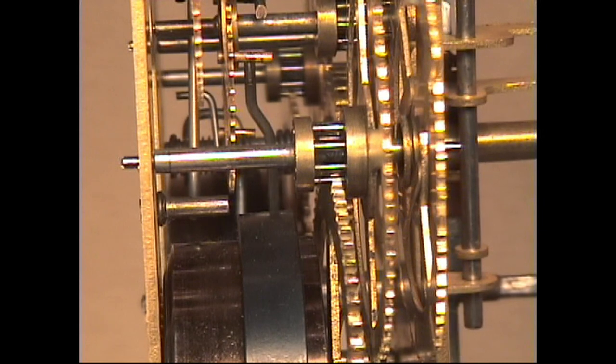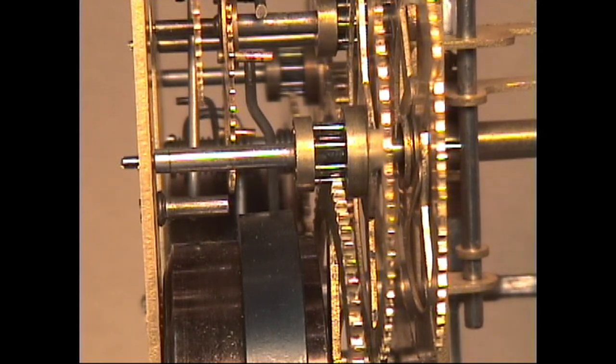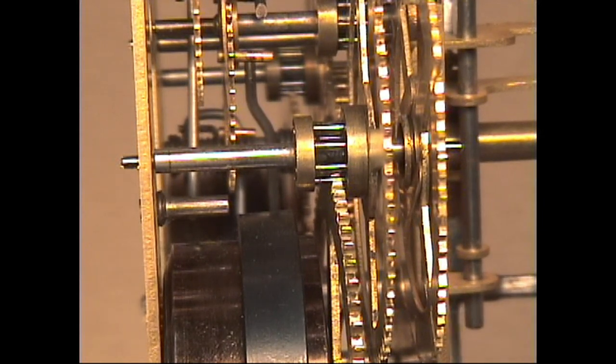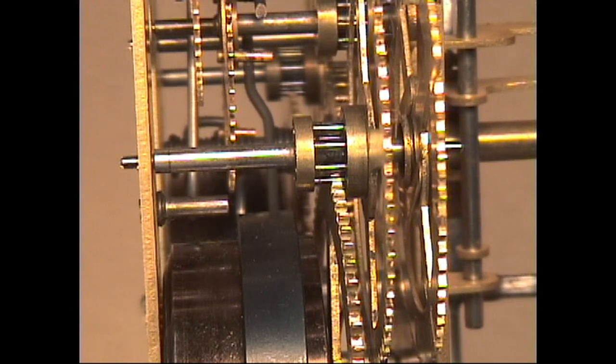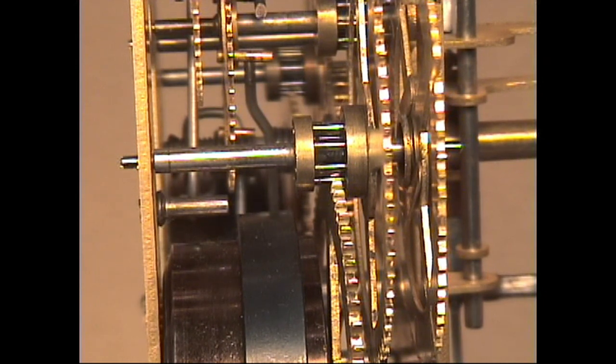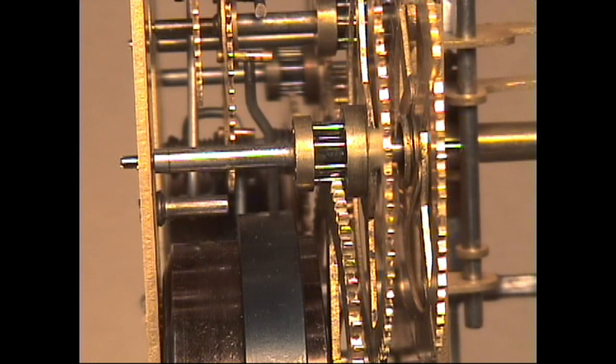As you can see, our arm on our center arbor is going up, lifting a lever. And then that lever that it's lifting can be adjusted the same way so that the strike on the half hour and the hour will be right on schedule and right on time.